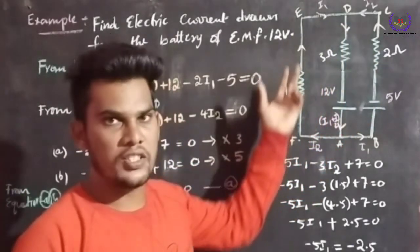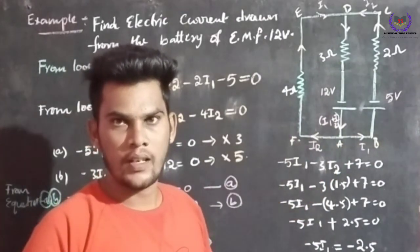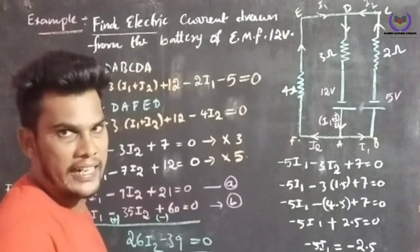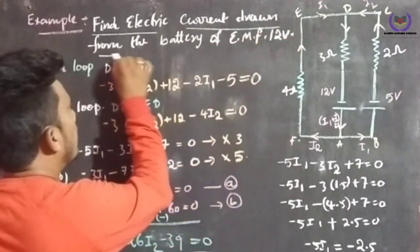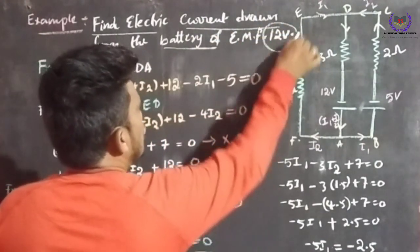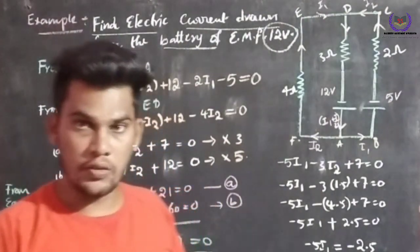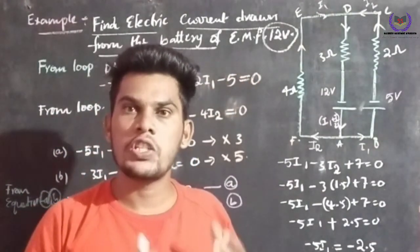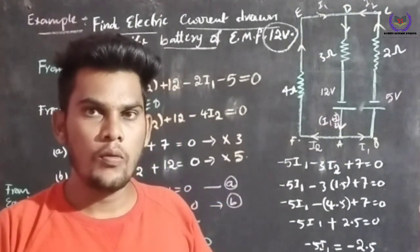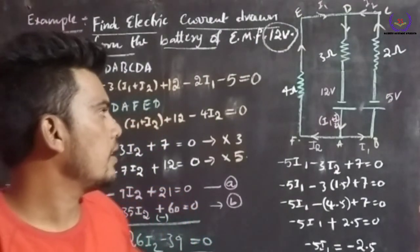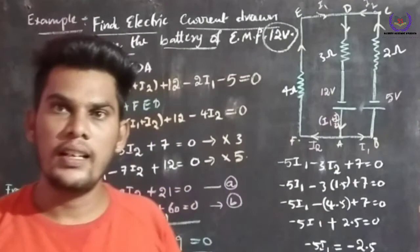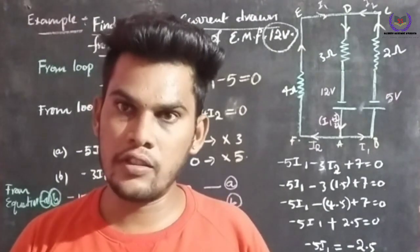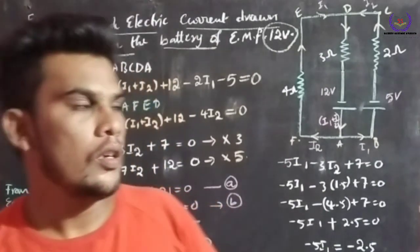In the examination they will give a diagram like this and ask: find the electric current drawn from a 12-volt battery. We have to calculate it with the help of Kirchhoff's second law, also called Kirchhoff's voltage law or Kirchhoff's loop law.